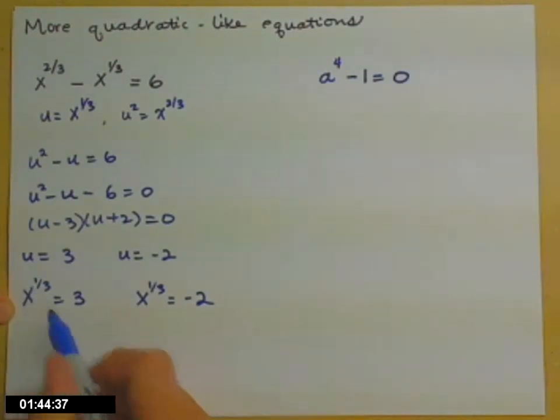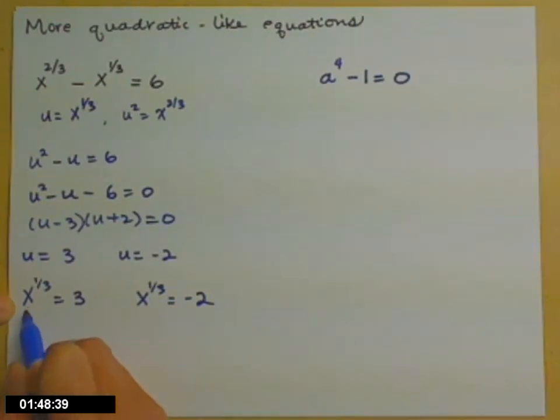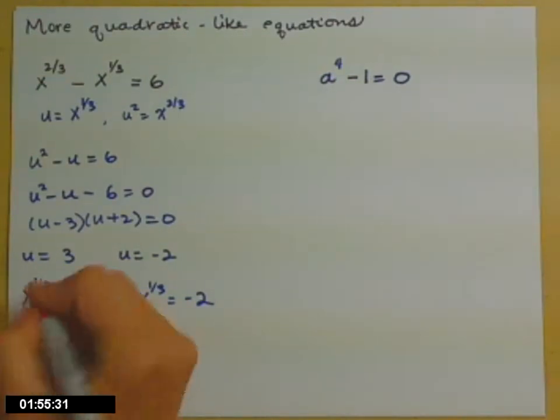But now I need to get rid of those one-third powers and go just to x's. So to do that, I need to raise the left side to the third power. I need to cube the left side, which means I also need to cube the right side so that I stay legal.